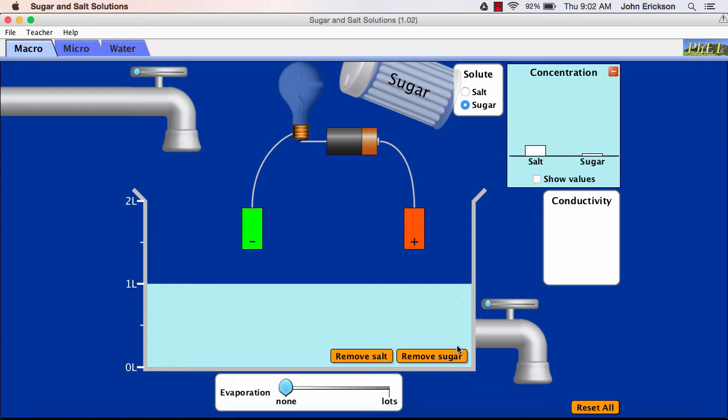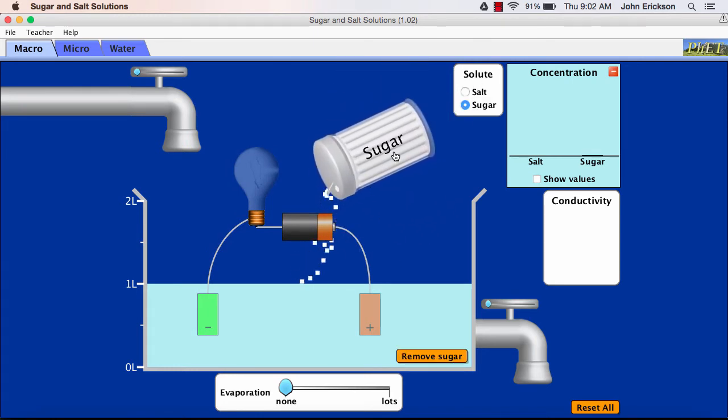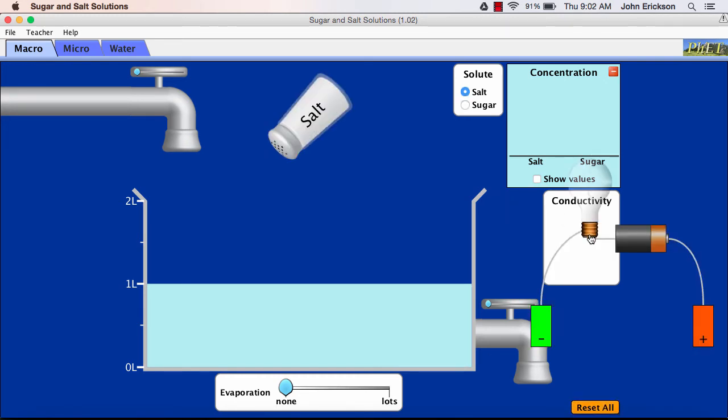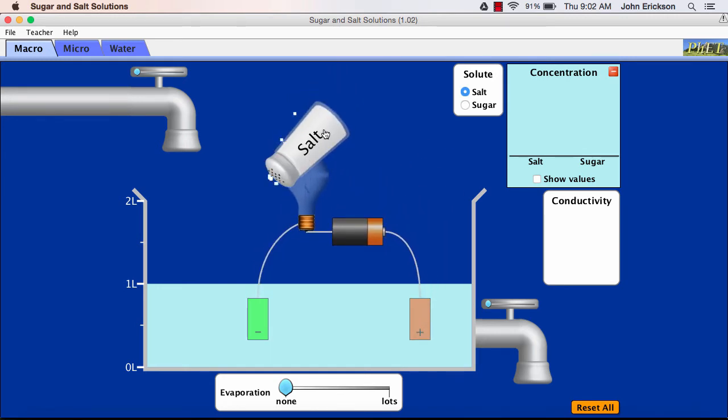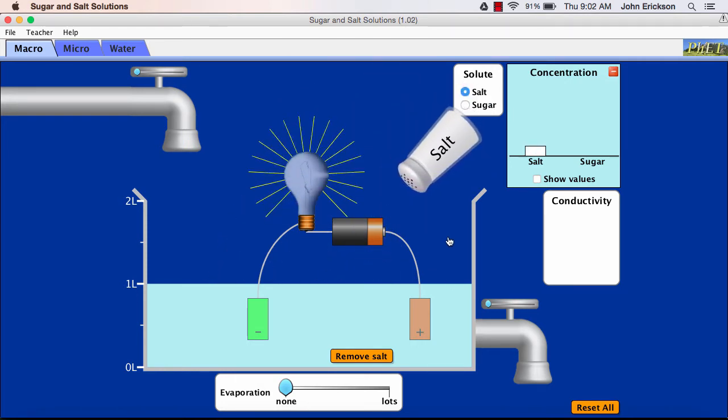So pure water is a non-electrolyte, but my salt-sugar solution is a good electrolyte. So let's start with a fresh solution and try just adding sugar. If we make a sugar solution, it does not carry a current. And if we make a salt solution, it does.